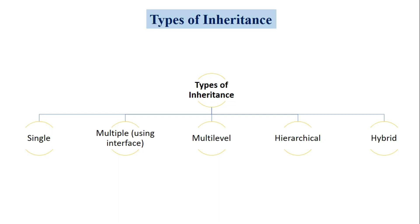In the previous lectures we already discussed about single, multiple, multilevel, and hierarchical inheritance in 4 separate lectures with examples. Today we are going to discuss about the last type — hybrid inheritance. Hybrid inheritance means the combination or collection of any two types of inheritance. For example, single inheritance with multilevel inheritance, or multilevel inheritance with hierarchical inheritance.